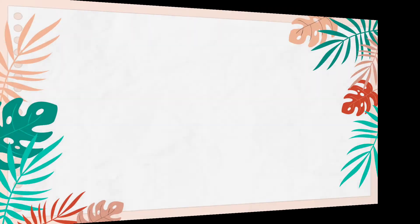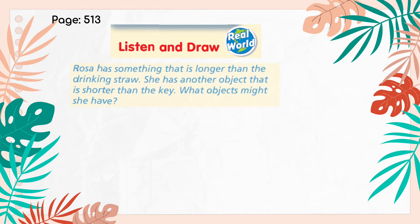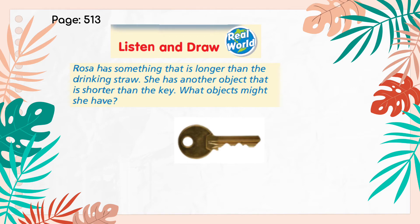The second part of the question says Rosa has another object that is shorter than the key. Let's draw a key — now what could Rosa have that is shorter in length than a key? Let's say she has a coin. A coin is shorter in length compared to the key. These are just examples; you are free to draw anything on page 513. One thing should be longer than the drinking straw while the other should be shorter than the key.